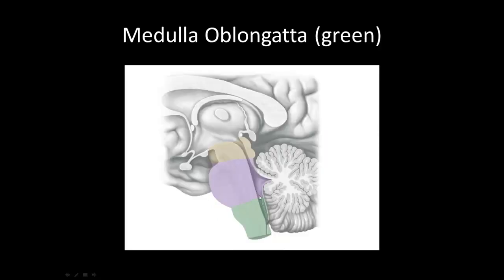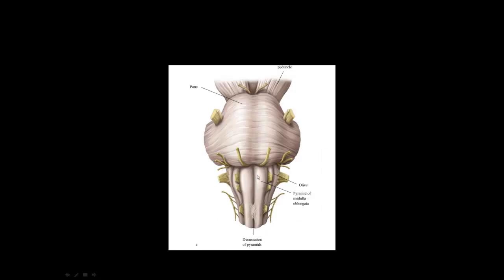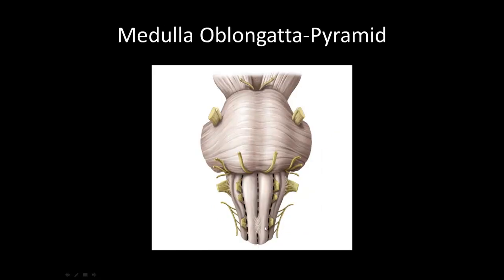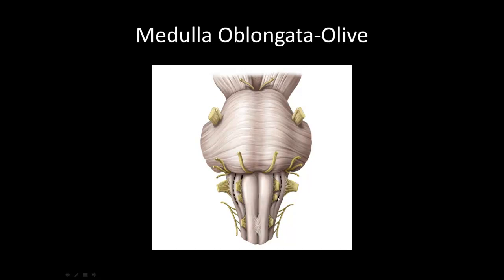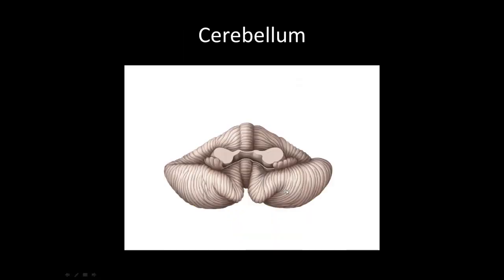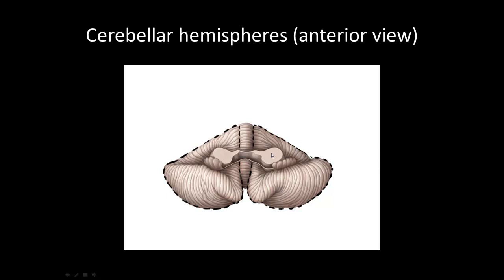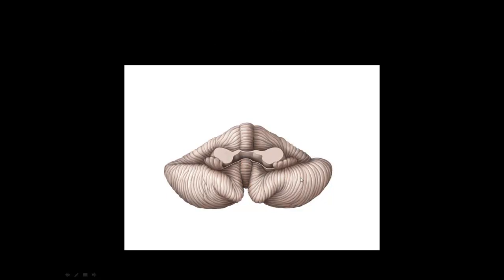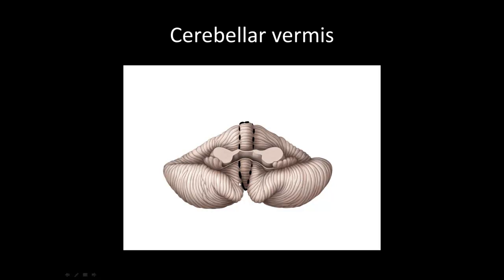Last, we have the medulla oblongata, highlighted in green. From an anterior perspective we have the pyramids, two structures that carry motor fibers from the brain down into the spinal cord. Just lateral to the pyramids we have the olive, one on each side. And finally the cerebellum — from an anterior view we have the two cerebellar hemispheres, right and left, with the cerebellar vermis right in the middle separating the two hemispheres.